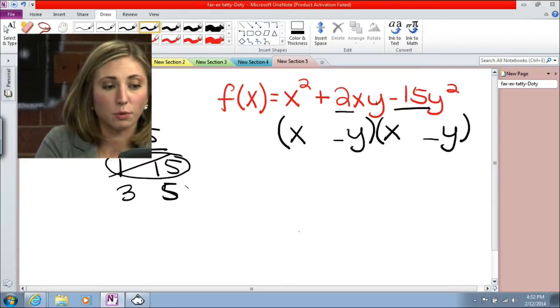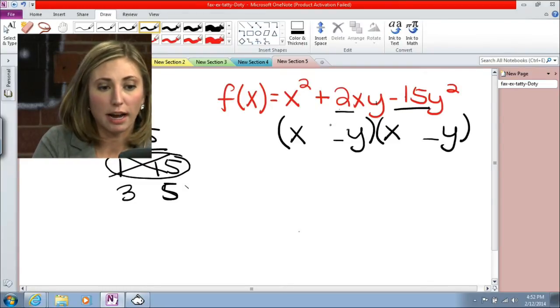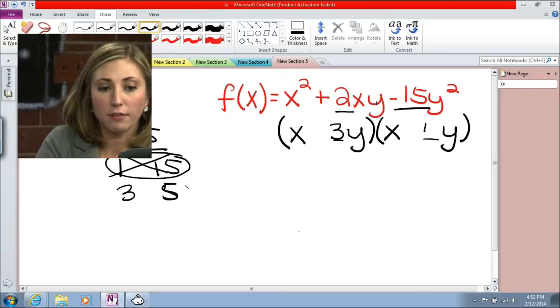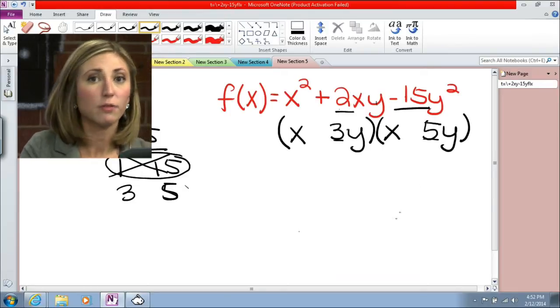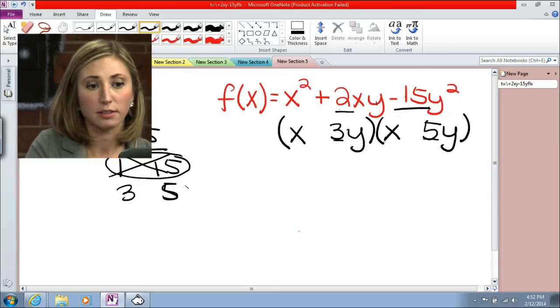And so because of that, these will not work. So we know it's going to have to be 3 and 5, because 3 and 5, we can add or subtract those to get us that 2.